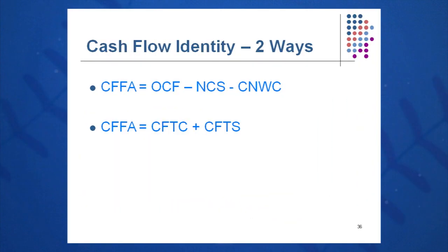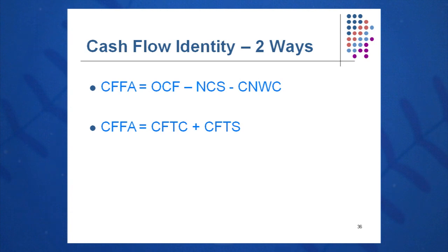There are two ways to calculate this cash flow identity. Cash flow from assets equals OCF minus NCS minus CNWC — that's operating cash flow minus net capital spending, the amount spent on property, plant and equipment, minus change in net working capital, which is the amount tied up in current assets minus current liabilities. The other way to calculate cash flow from assets is cash flow to creditors plus cash flow to stockholders. Cash in equals cash out.